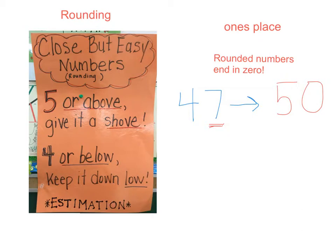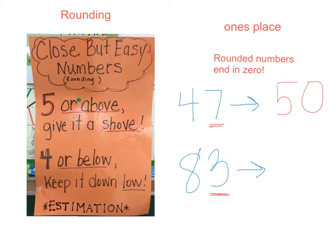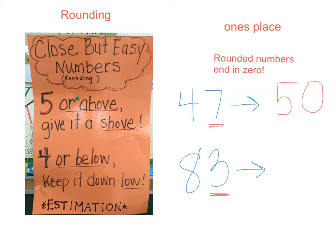Another example, if we wanted to round eighty-three to the nearest ten. Again, we want to look at the digit in the ones place. It's a three. Remembering our poem again, five or above, give it a shove. Four or below, keep it down low.